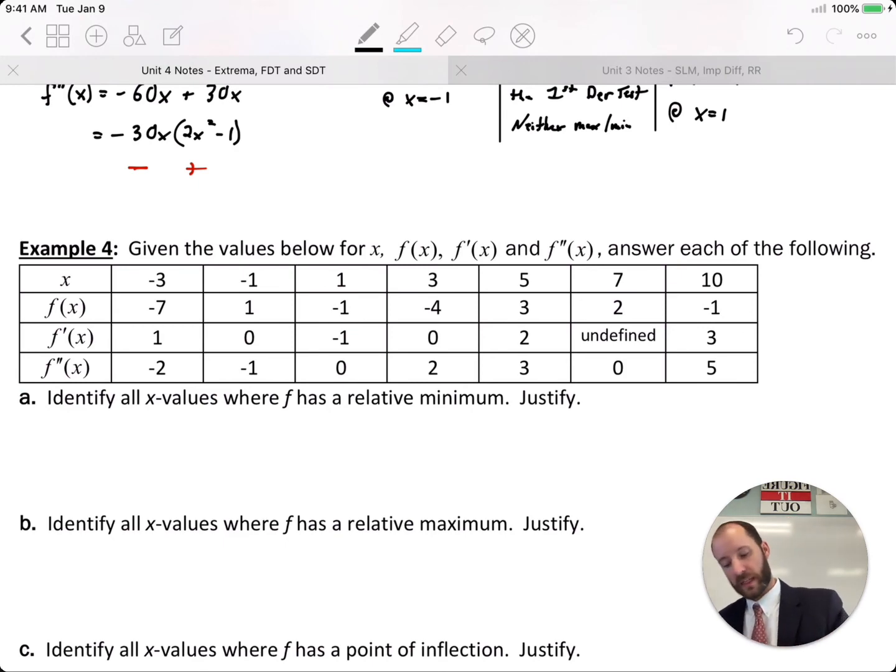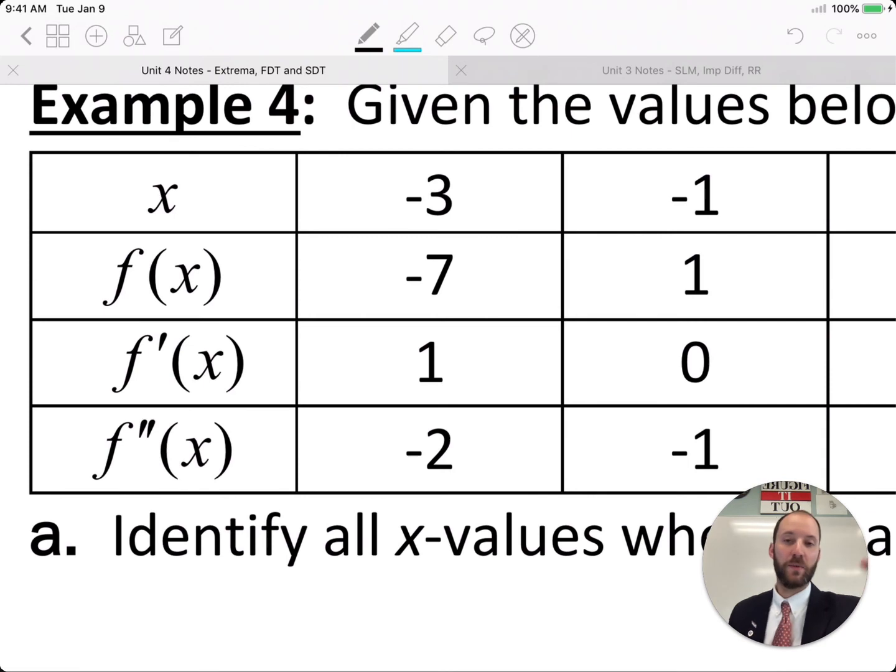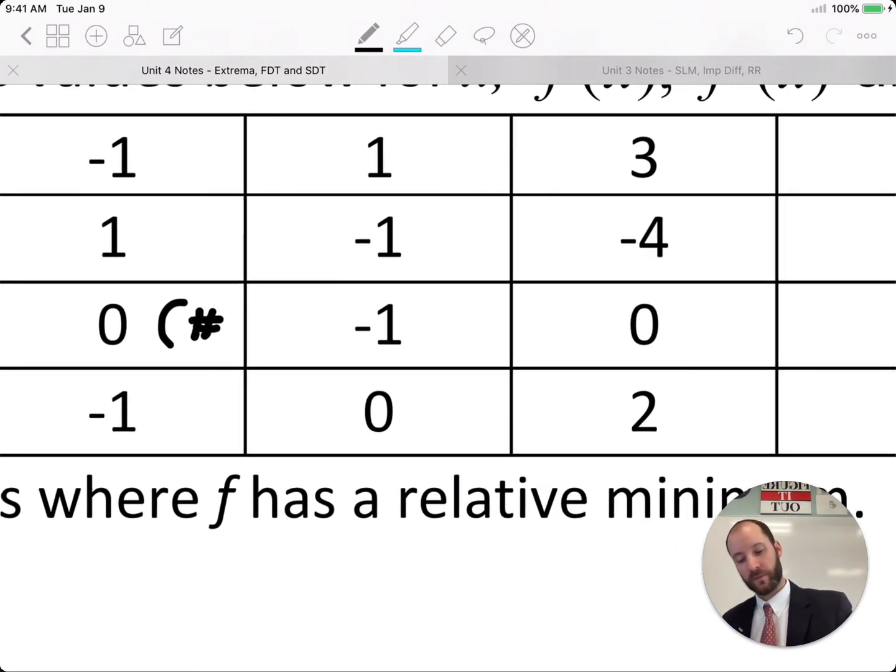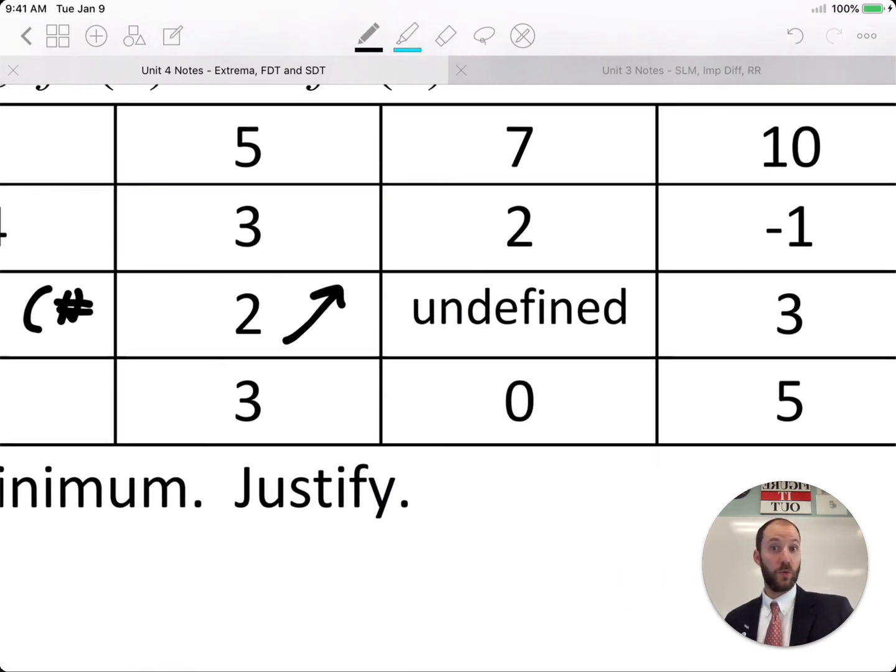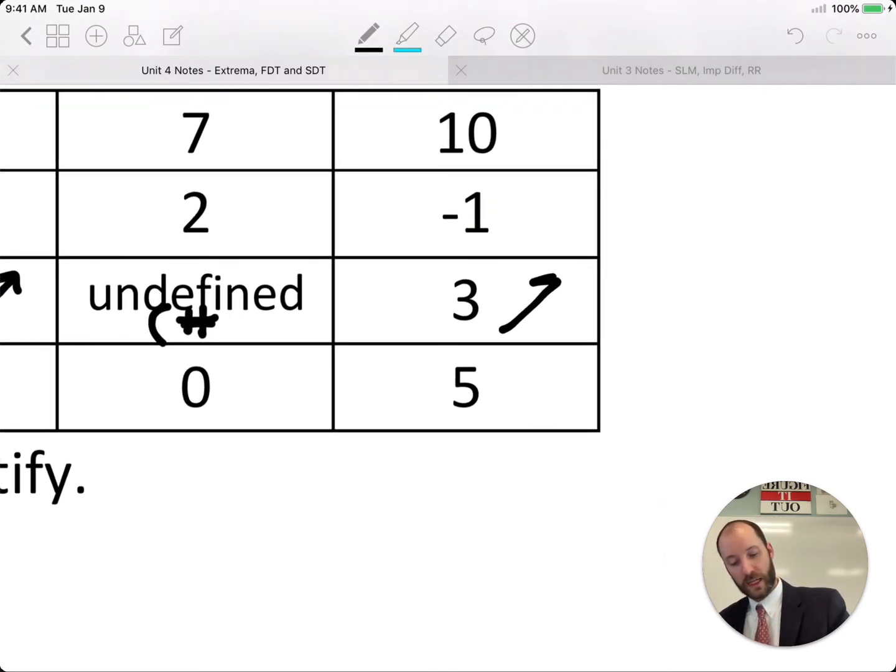But my advice is to diagram and make some notes about what all these values mean. For example, in the f' column we have positive 1, that means increasing behavior. f' column has 0, that's a critical number. Negative means decreasing behavior, 0 is a critical number. Positive is increasing behavior, undefined. Remember critical numbers happen where the first derivative equals 0 or is undefined, and 3 is increasing behavior.